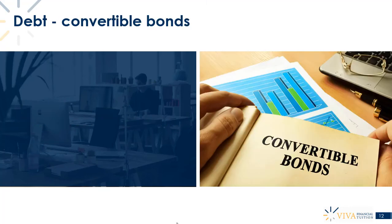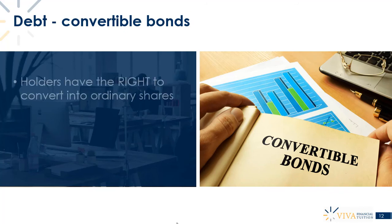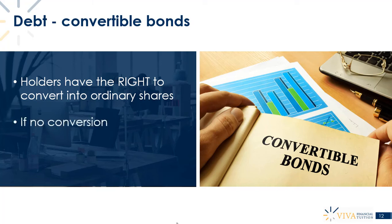Another type of debt is a convertible bond. With a convertible bond, you issue it and receive some cash, but the bond holder — the person you'd normally pay the cash back to — can say they don't actually want the cash back; they want shares in your company instead. So the bond holder, who lent you the cash in the first place, can ask for the cash back or ask for shares in the company instead. They are the ones who have the right to convert into ordinary shares. If they do not want to convert, the bond is redeemed — that is, repaid — instead.